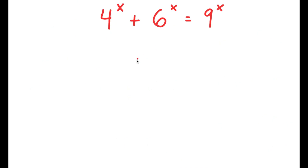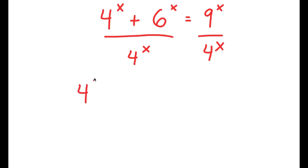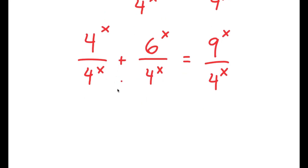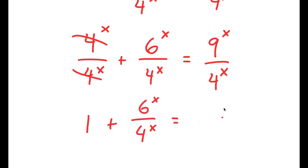Now in this problem, I have 4 to the power of x plus 6 to the power of x equals 9 to the power of x. To solve this, I'm going to divide both sides by 4 to the power of x. So I get 4^x over 4^x plus 6^x over 4^x equals 9^x over 4^x. The 4^x terms cancel, giving me 1 plus 6^x over 4^x equals 9^x over 4^x.